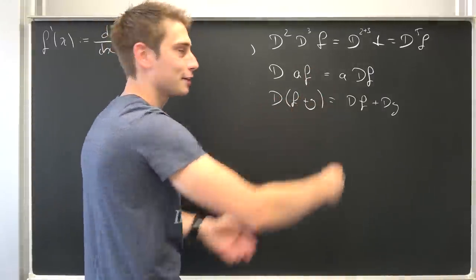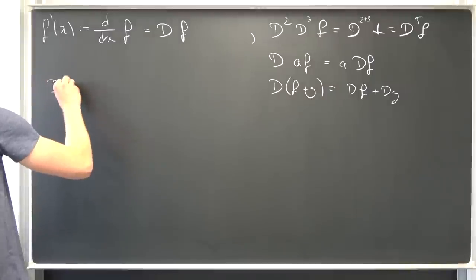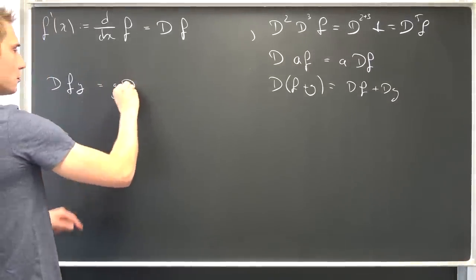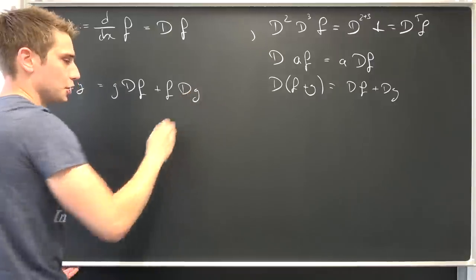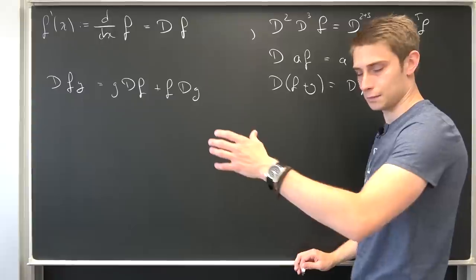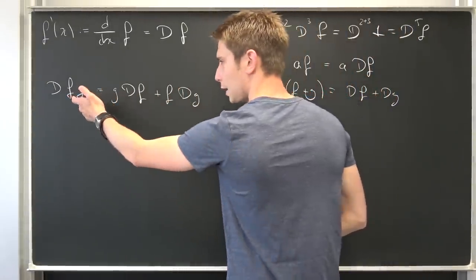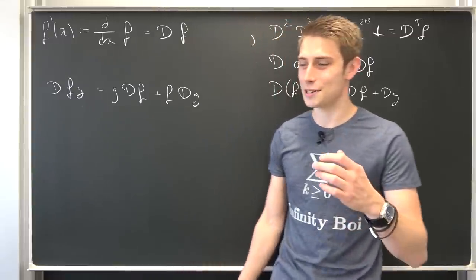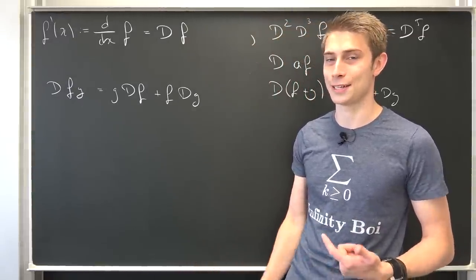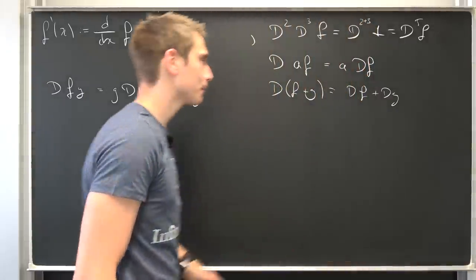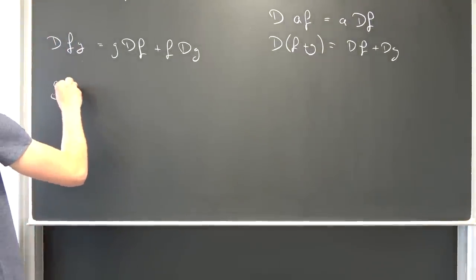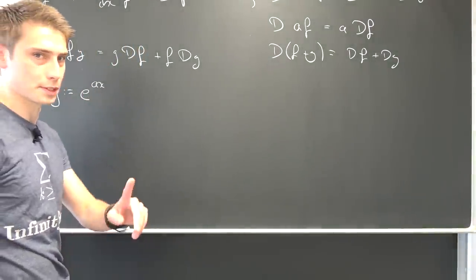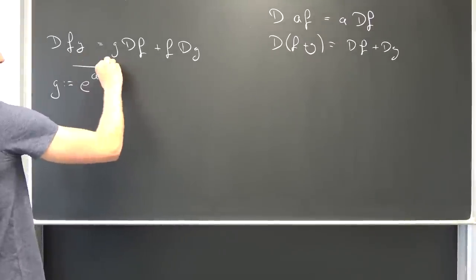Bear with me here. We know the product rule: if we have D of (f times g), two functions with respect to x, this is nothing but g times the differential of f plus f times the differential of g. What happens now if we replace the function g with some exponential function? It's a really nice function because it's going to preserve itself after differentiation. So let's say that our g is going to be defined as e to the ax.